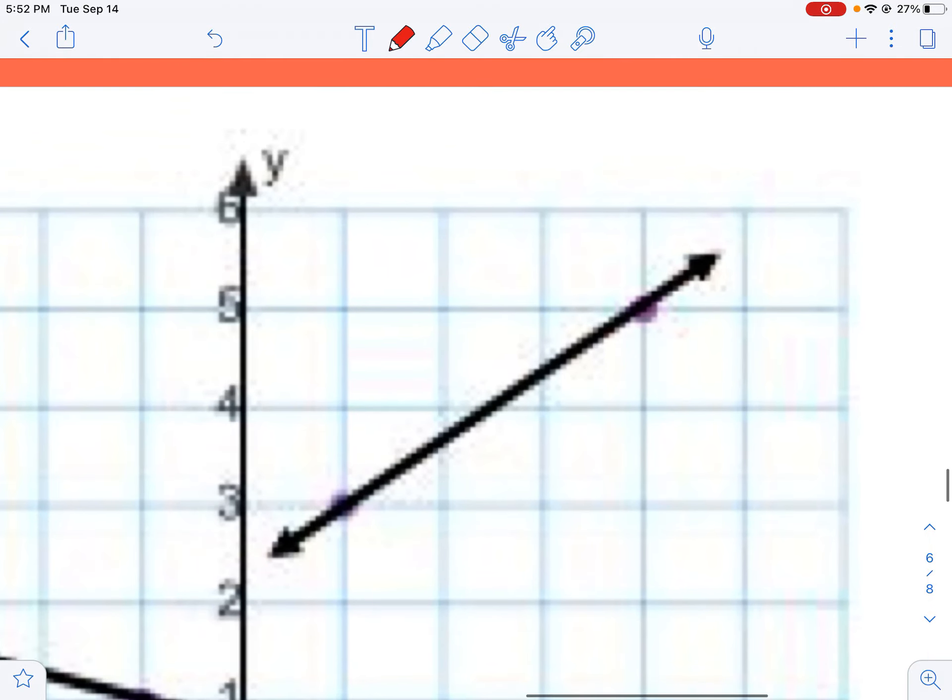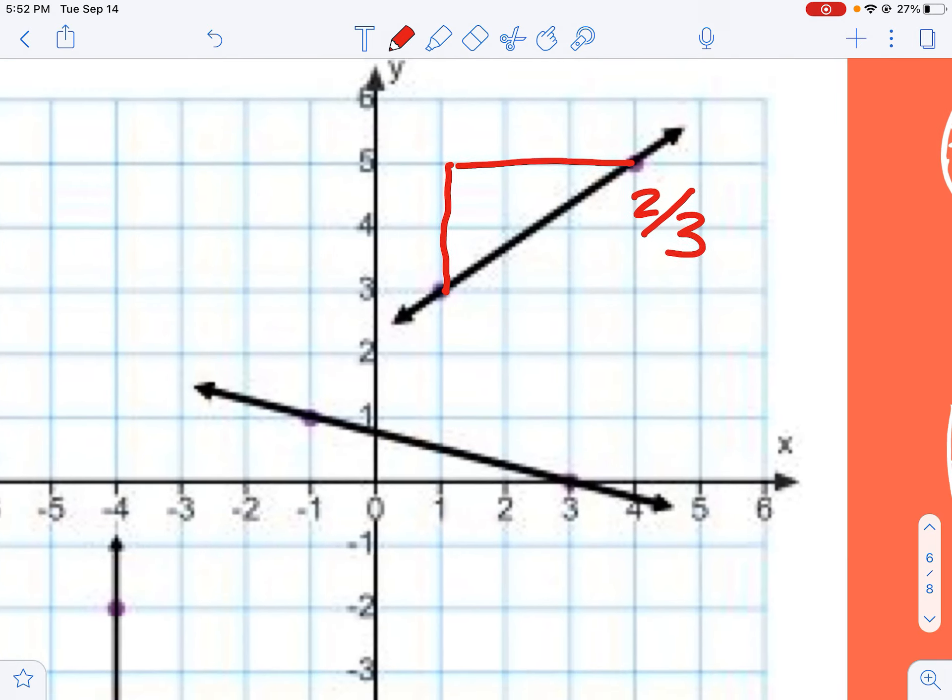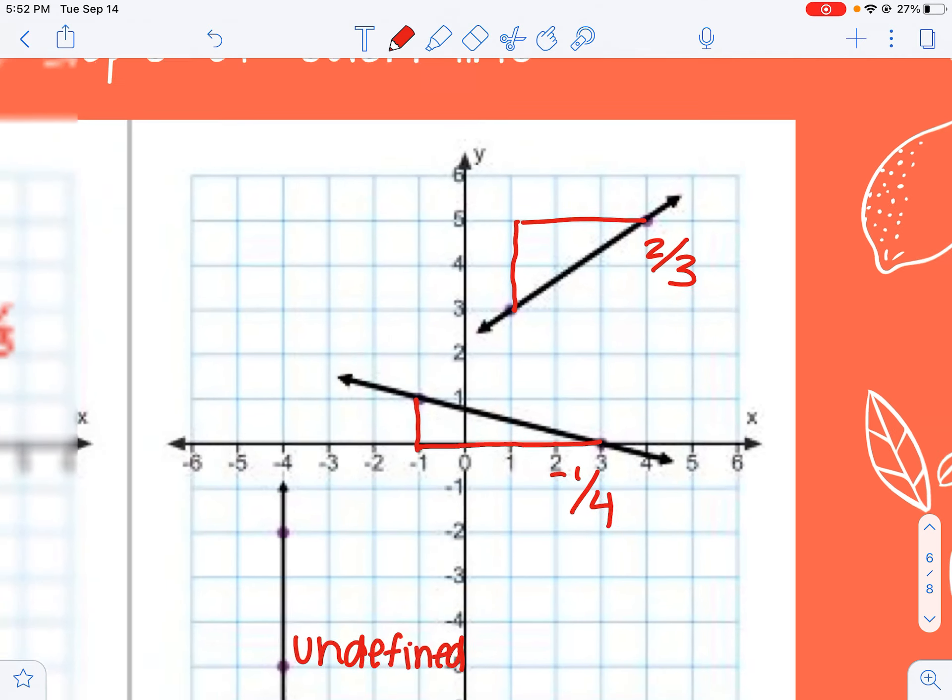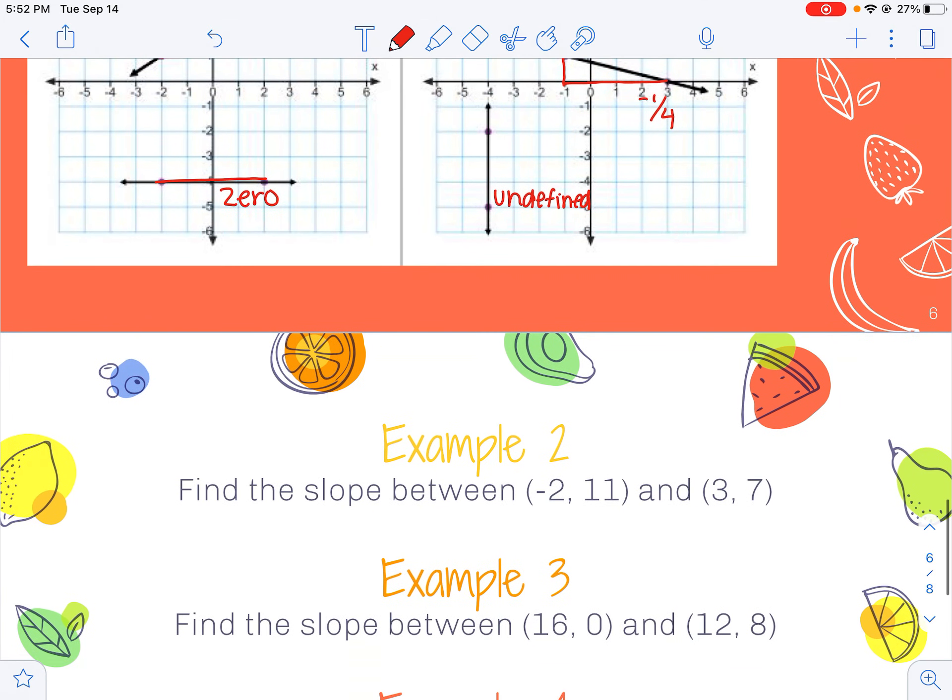This one's going straight up and down, so it's undefined. And then I've got two more over here. Again, I'm going up 2 over 3. I'm going down 1 over 1, 2, 3, 4. Hopefully that's review for all of you.